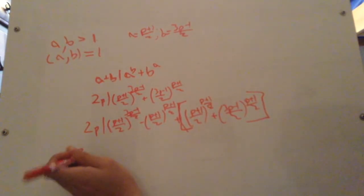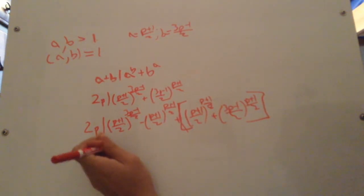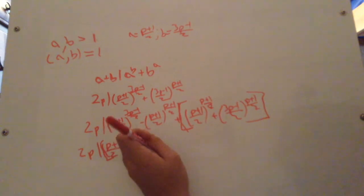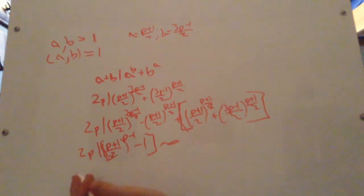So, for the rest of this, we have 2p divides p plus 1 over 2 to the p minus 1 minus 1 times something. Well, totient function of 2p is p minus 1, so something relatively prime to the p minus 1 is congruent to 1. This is divisible by 2p, and we are almost done.